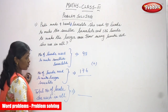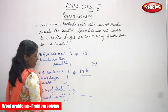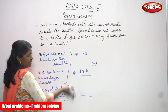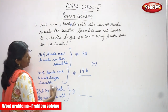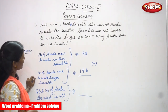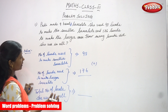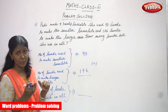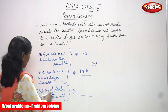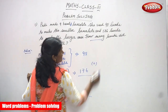For the smaller bracelet she used 98 beads, and for the larger bracelet she used 176 beads. Now we are going to find out how many beads did she use in all — that means the total number of beads she used for both bracelets combined. So we are going to add.